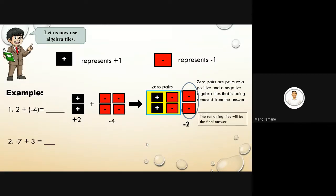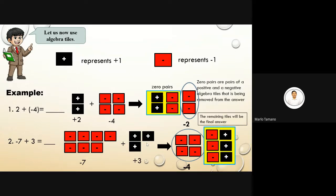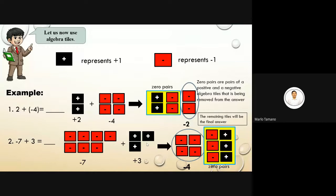Number two: negative seven plus three. We have seven negative one tiles plus three positive one tiles. We identify three negative tiles and three positive tiles as zero pairs and remove them. The remaining tiles are negative four.